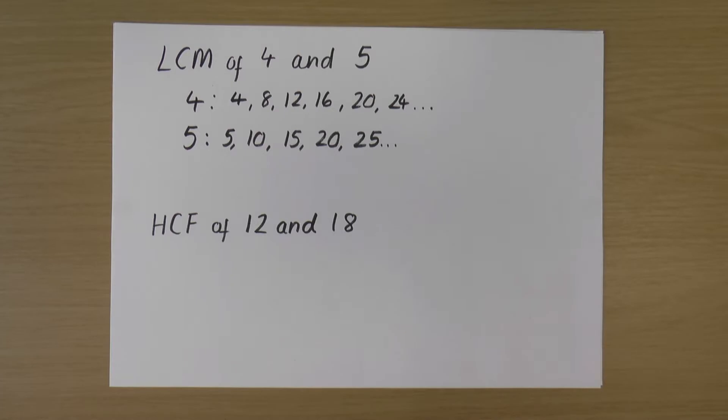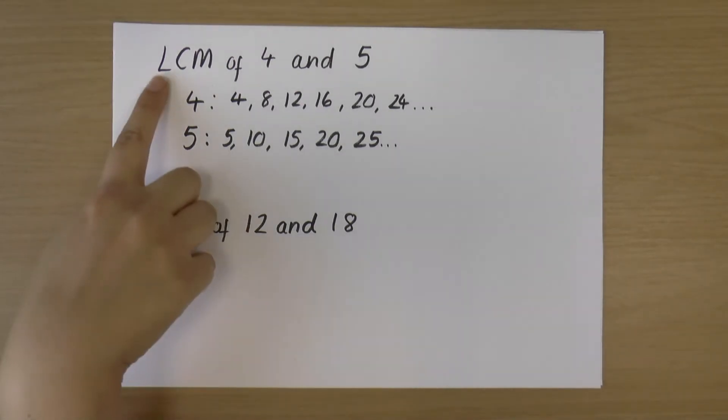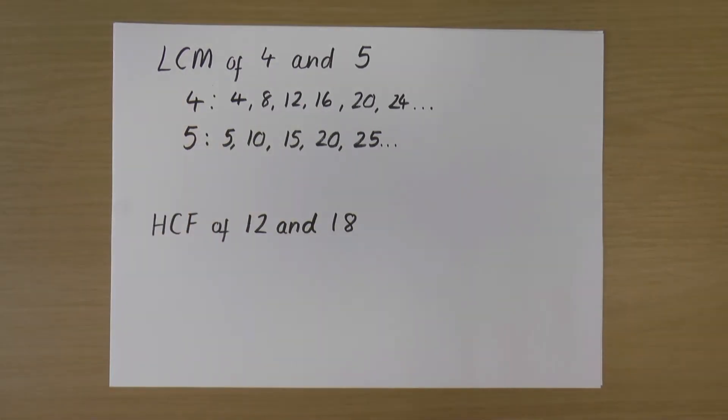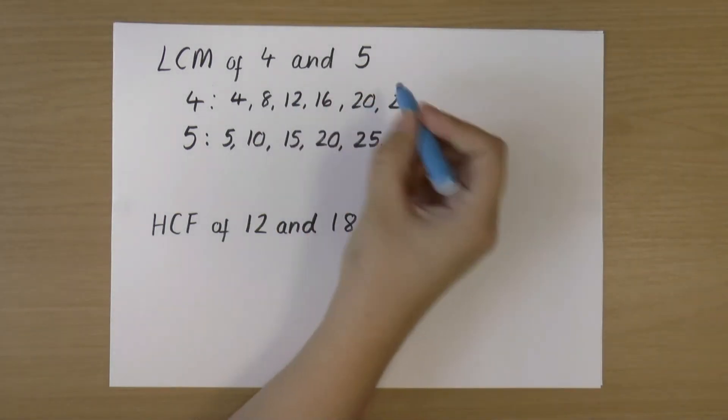So I've been asked to find the Lowest Common Multiple. Common just means a number that is in both of those lists. So we've got two lists of multiples, we're looking for a number that is in both of those lists, and we're looking for the lowest number in both of those lists.